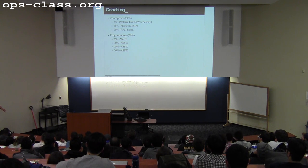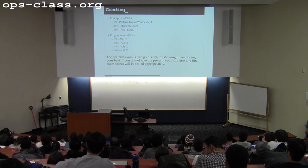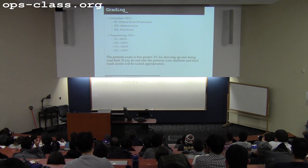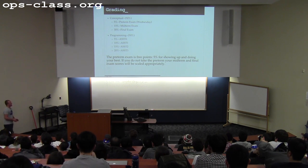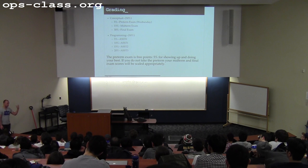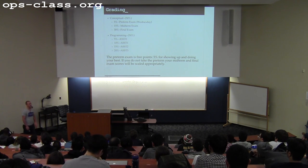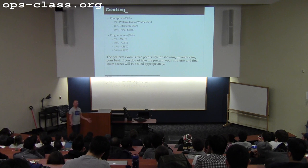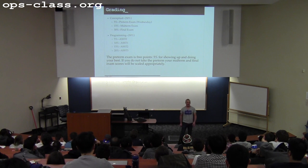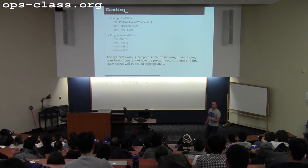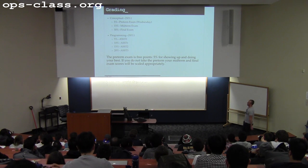Quick breakdown of grading: half and half — half conceptual, half programming. On Wednesday we do this thing every year called the preterm exam — it's about 15 minutes of your time, although some people get competitive about it and take the whole hour. What we're trying to do is figure out what you guys already know, so we'll do that during Wednesday's class time. It's five free percentage points — you come and do a little concept battery to allow us to understand what people know when they start the class.